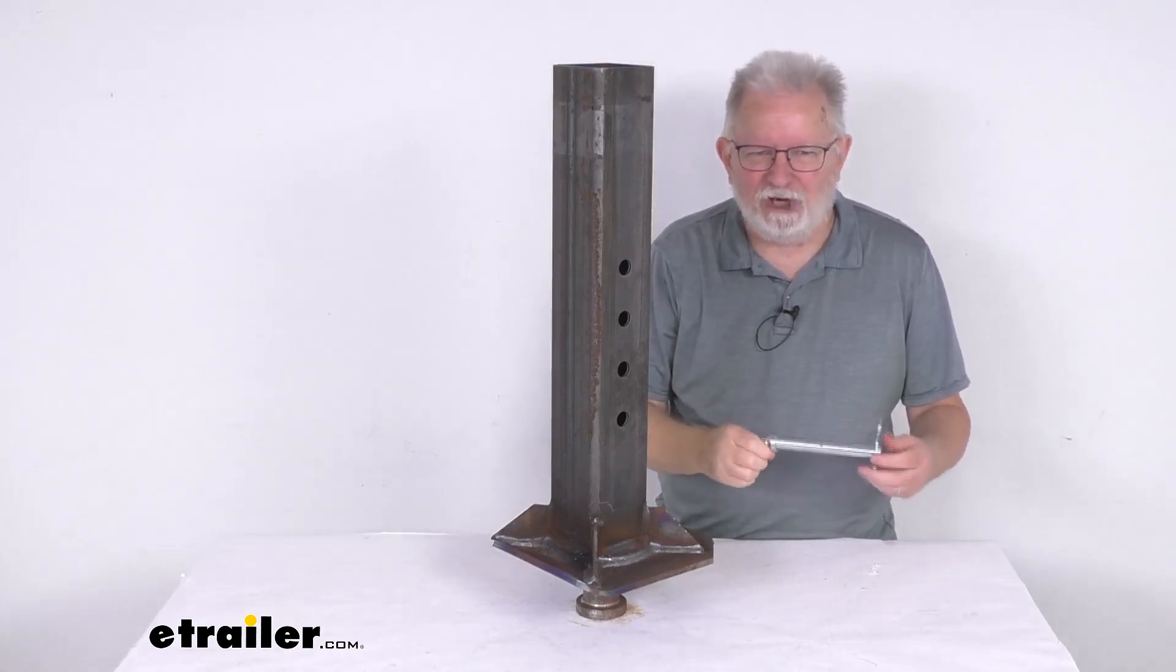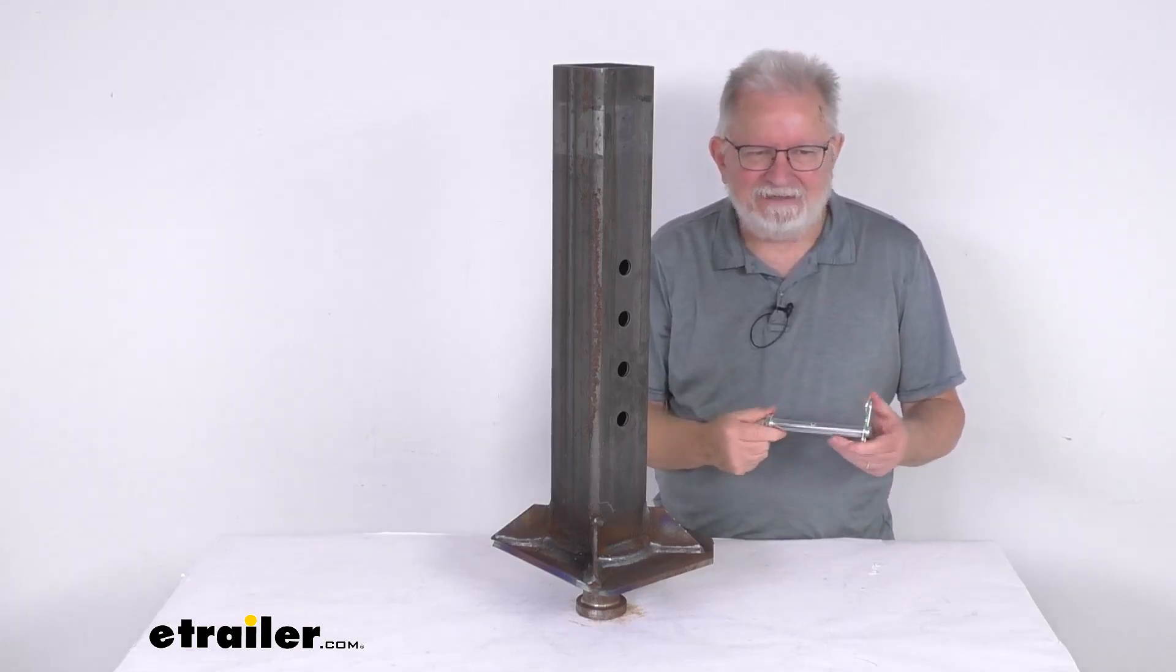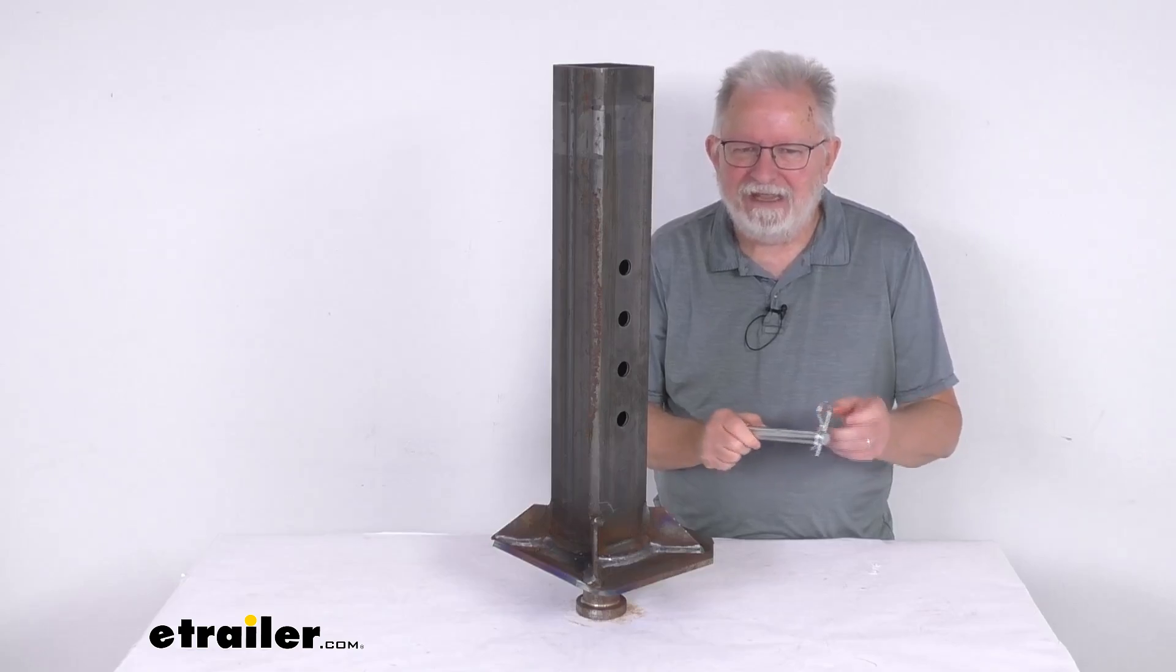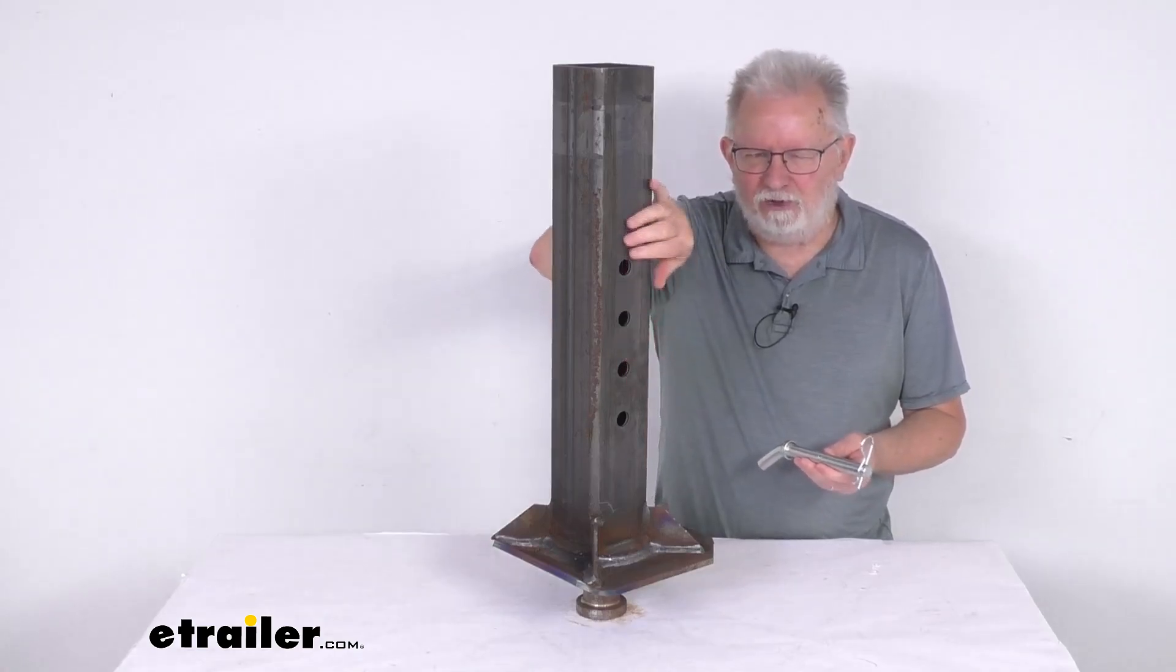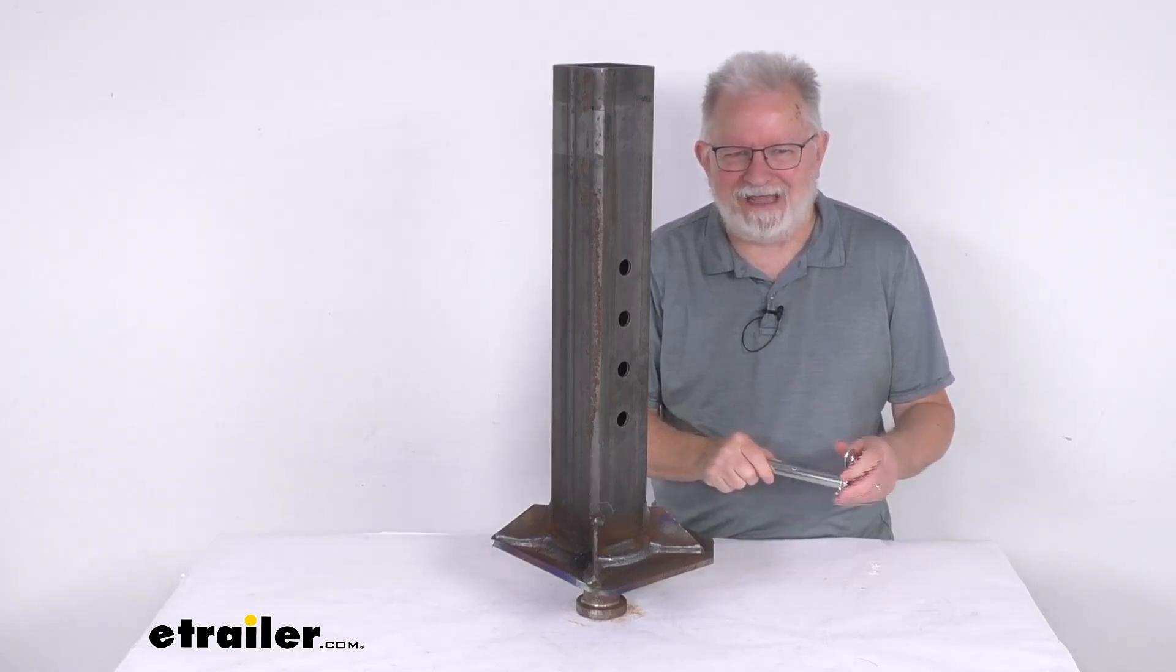This is a replacement load bearing pin for eTrailer and RAM gooseneck couplers. The pin installs into the vertical adjustment holes of your gooseneck coupler to hold it at the correct height for your application.